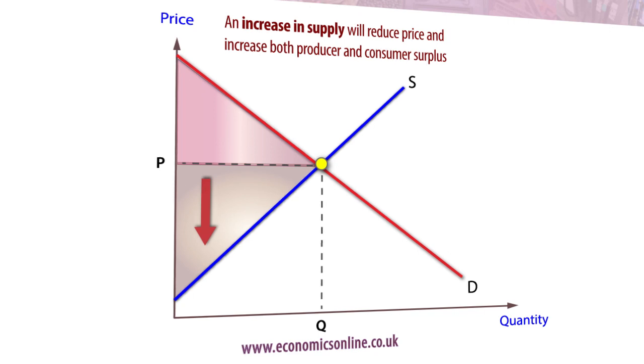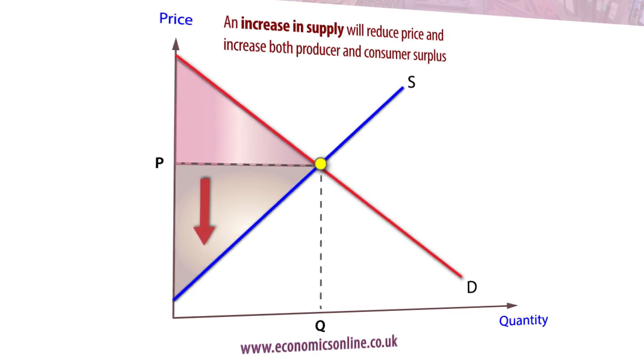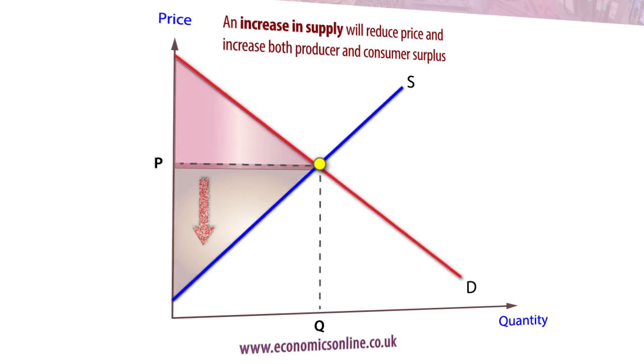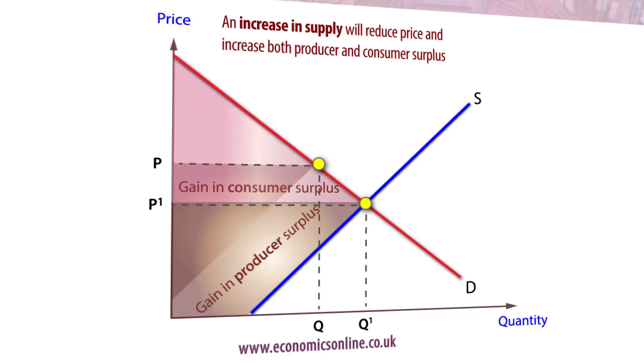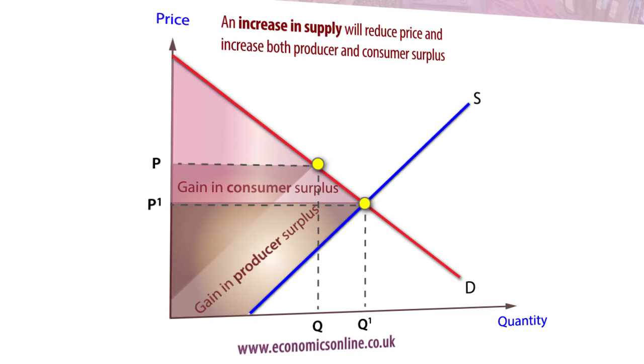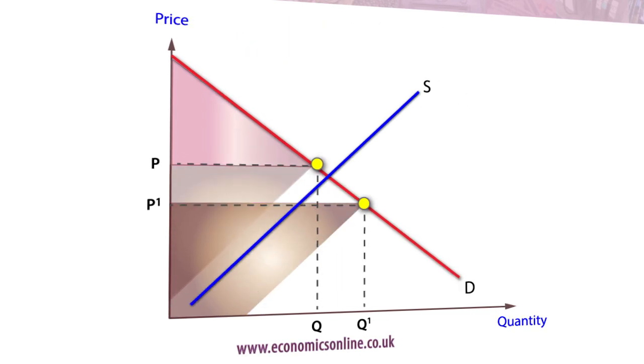Surplus is maximized when the market is in equilibrium. Surplus will increase if the supply curve shifts to the right. This can happen following a fall in wages or other costs, or an increase in productivity.